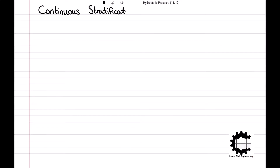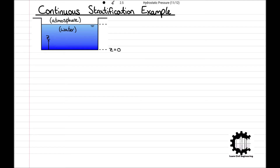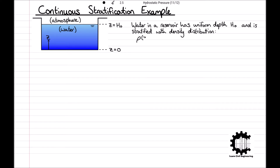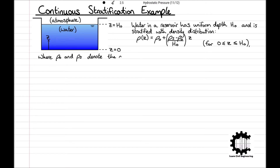Moving on to the first example problem for continuous stratification. Water in a reservoir has uniform depth H0 and is stratified with the density distribution rho at a height Z equals rho 0 plus rho S minus rho 0 divided by H0 times by Z, where Z is greater than or equal to zero and less than or equal to H0. The Z coordinate is directed vertically upwards with Z equals zero at the base of the reservoir.